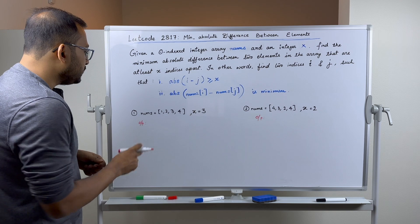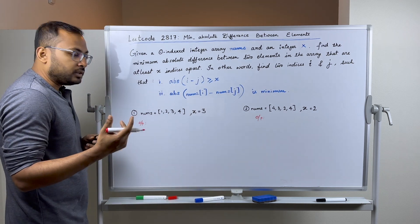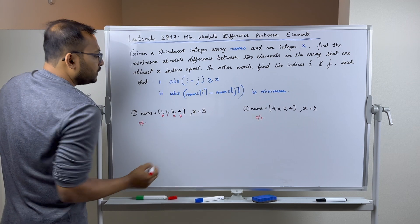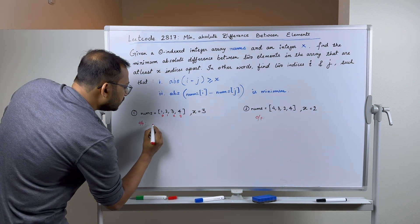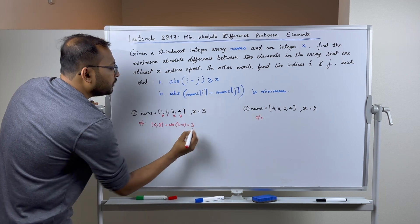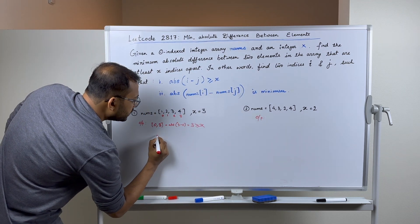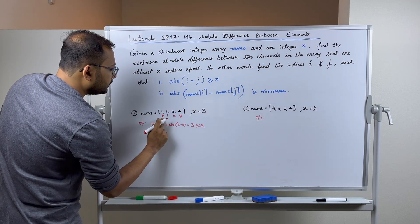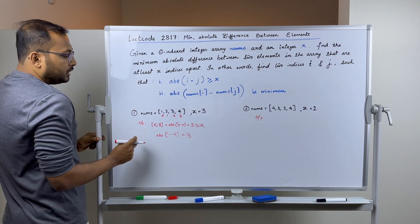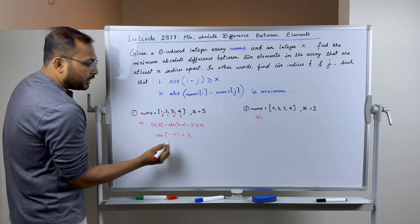Let's see some examples. The first example: the array nums has values 1, 2, 3, and 4, and x is 3. The only possible pair that is three indices apart is index 0 and index 3, because the absolute value of 3 minus 0 is 3, which is greater than or equal to x. The value of nums[0] is 1 and nums[3] is 4, so the absolute difference is 3. Our answer is 3.